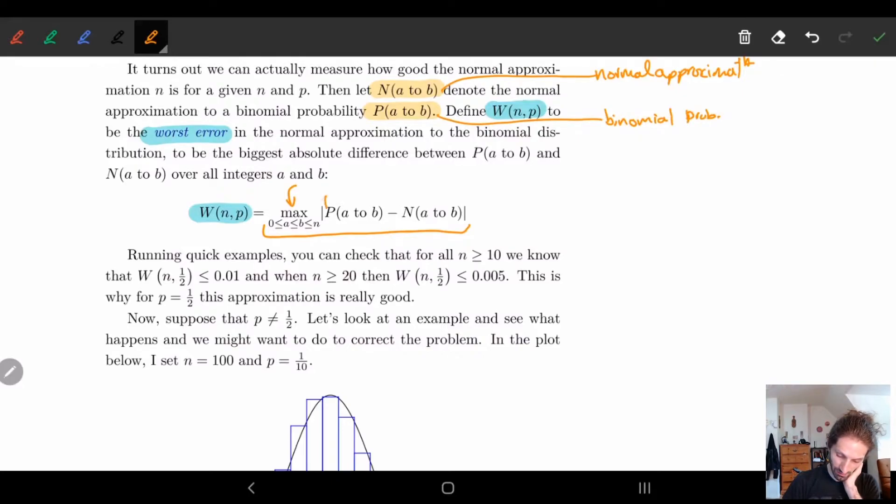So it's just looking at the difference between our binomial probability and our normal approximation, how big of a gap is there between the two.